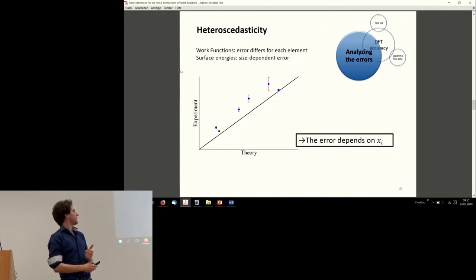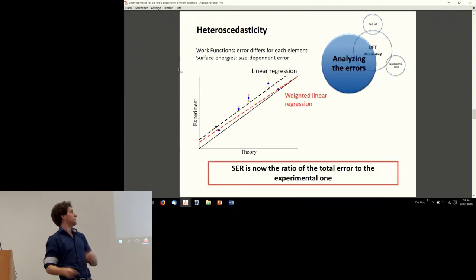There's a slight snag in what we're trying to do. We had size dependent errors for the surface energy and for different materials different errors for the work function. This is what statistical people call heteroscedasticity—your error varies from element to element in our case. How do you tackle this problem? You do a weighted linear regression where your weights are proportional to the uncertainty on the experiment. It has an important implication on when you're talking about the accuracy of your theory, because the cost function, your standard error on the regression, is now relative to the experimental one.